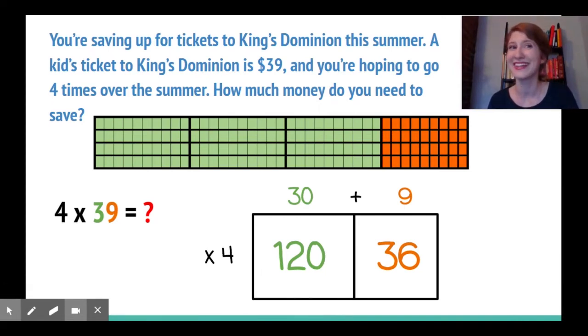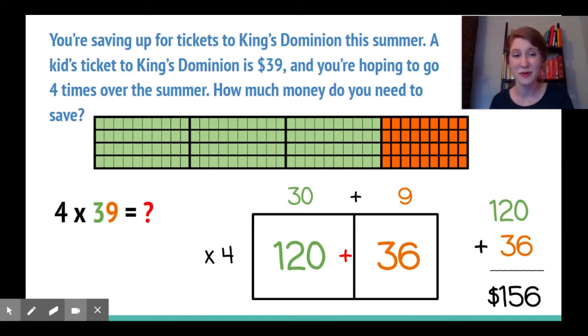What's my last step? Again, you got it. I need to add my partial products. One hundred twenty plus thirty-six means that I need to save up one hundred fifty-six dollars if we're going to King's Dominion four times. There's our final product. Nice job.